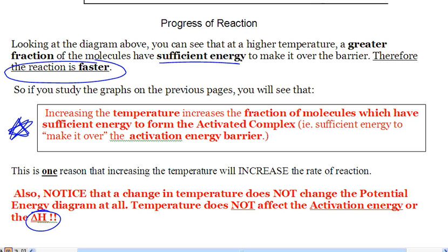To summarize: the greater the fraction of molecules that have sufficient energy, the faster the reaction. Increasing the temperature increases the fraction of molecules which have sufficient energy to form the activated complex. It does not change the EA — notice that a change in temperature does not change the potential energy diagram at all. Temperature does not affect the EA or Delta H — those are great trick questions.